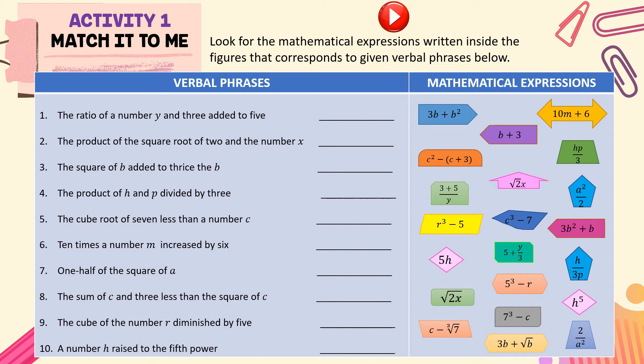Now, let's reveal the answers. For number 1, the ratio of a number Y and 3 added to 5. We have 5 plus Y over 3. For number 2, the product of the square root of 2 and the number X. Square root of 2, X.